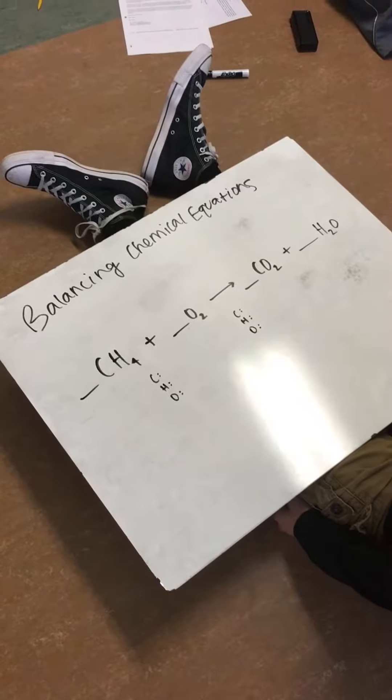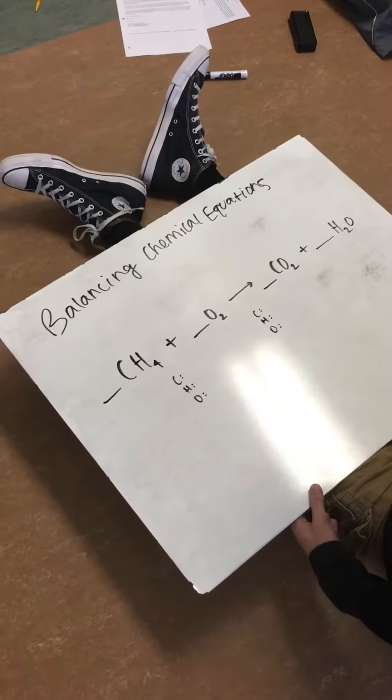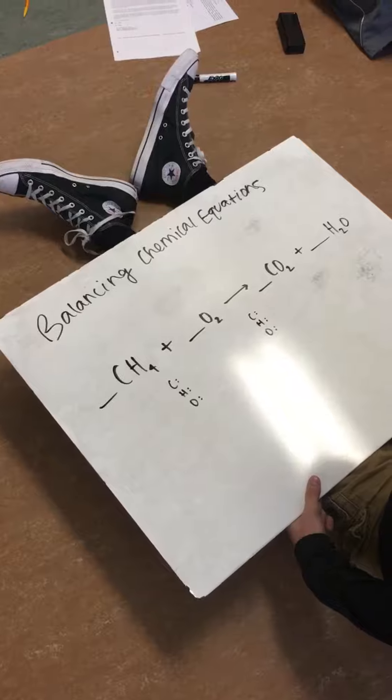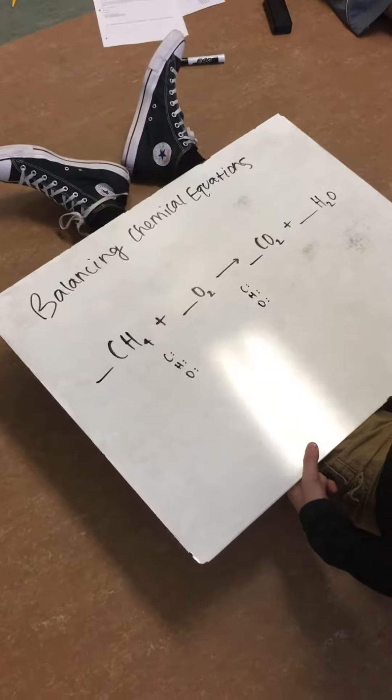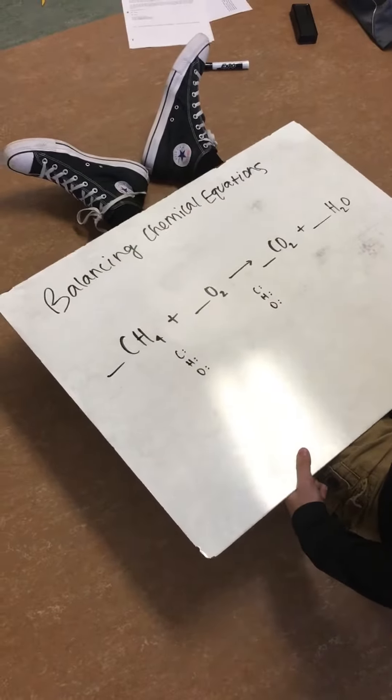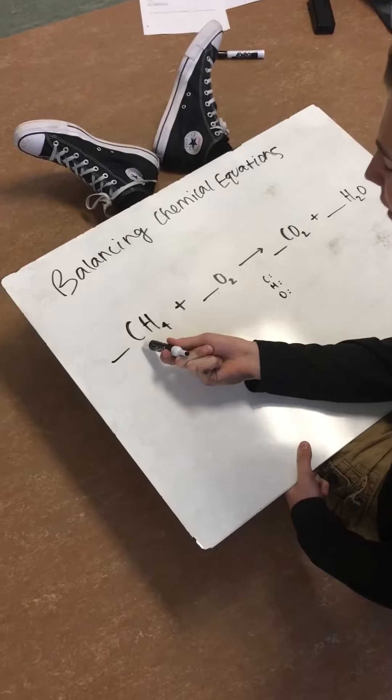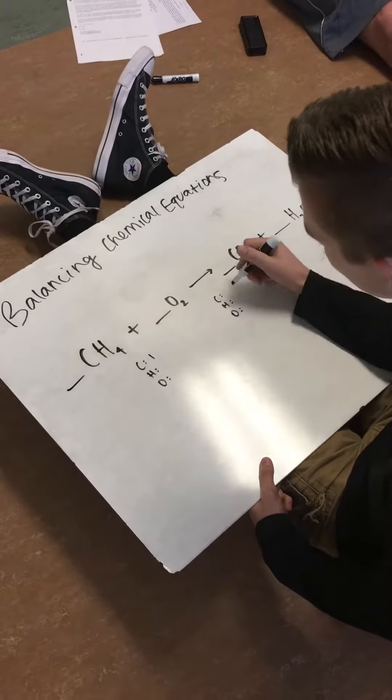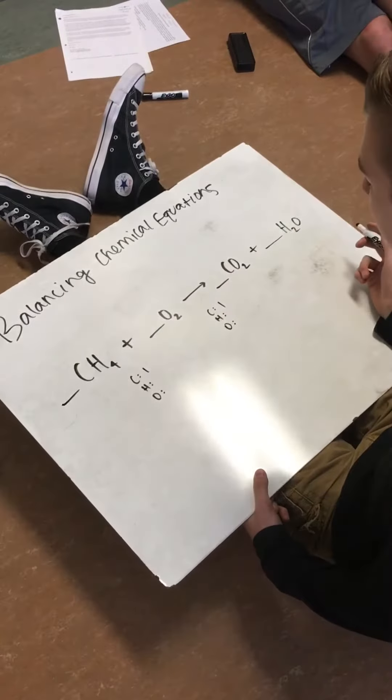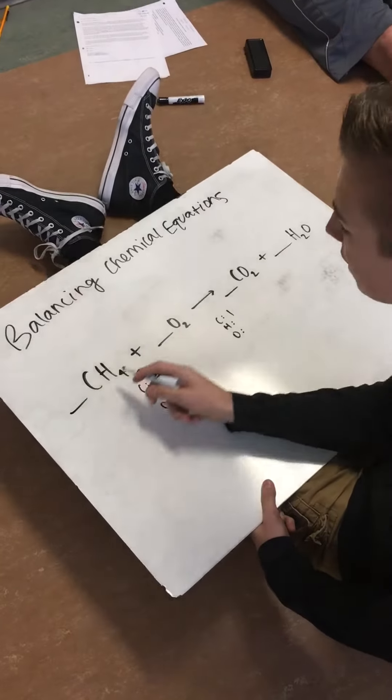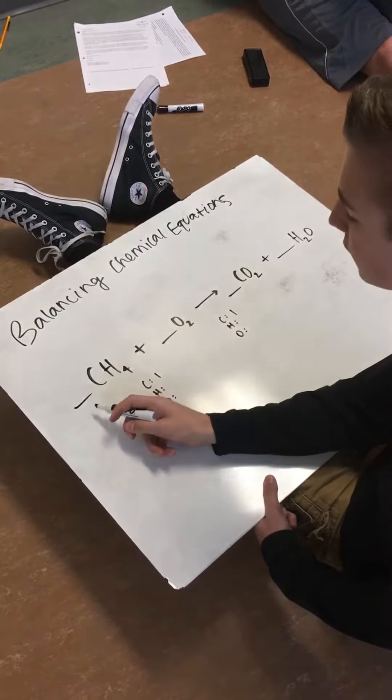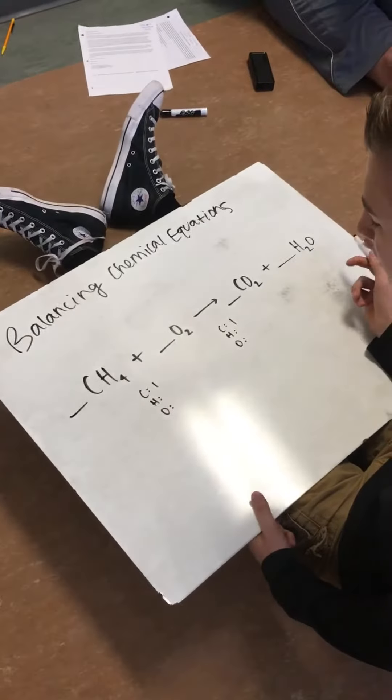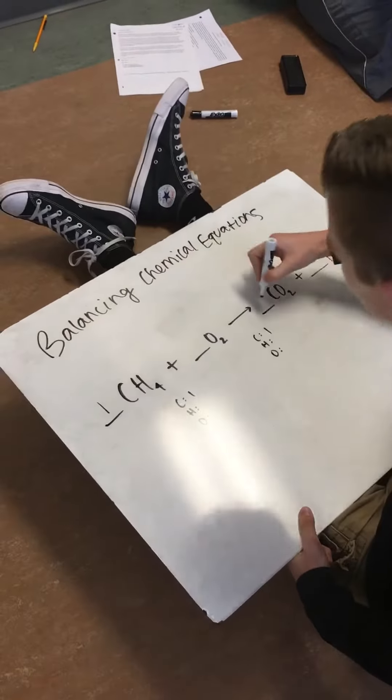We're going to balance a chemical equation. First step, I always like to start with carbon because it's good to get that out of the way. So if you have one carbon here on the left and then you have one on the right, then it's already balanced. So that part's good. You want to keep these with the same coefficient to keep the carbons balanced, so I'm going to put a one here and one here.